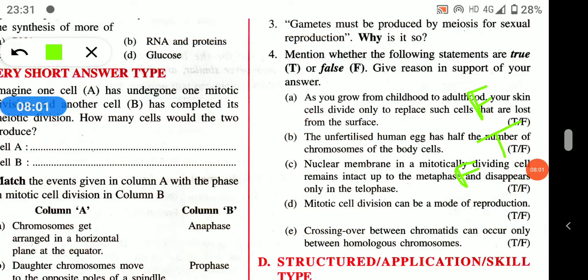Crossing over between chromatids can occur only between homologous chromosomes — this statement is true. Crossing over occurs between non-sister chromatids of homologous chromosomes.